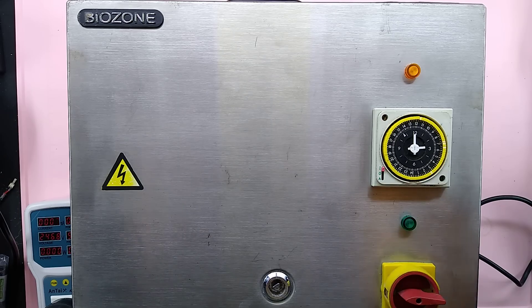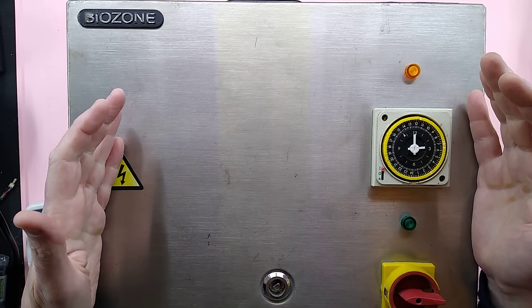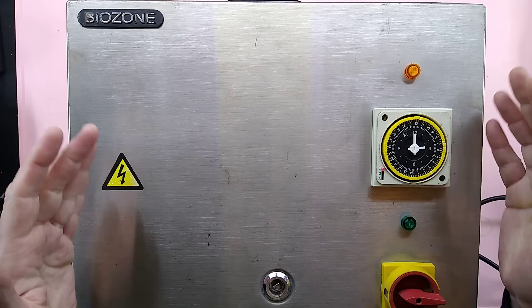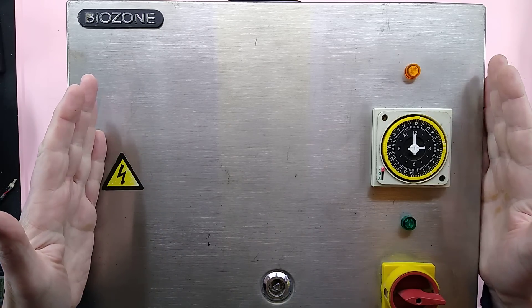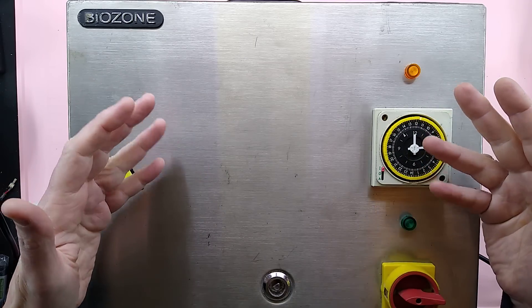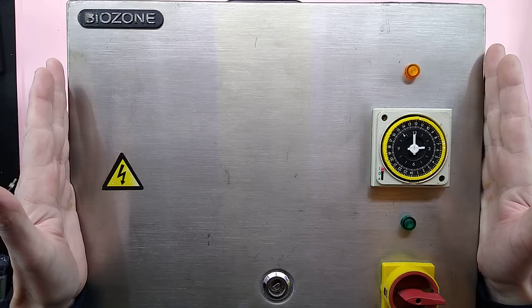This complete monster was an irresistible eBay find. It's a piece of industrial equipment for sanitizing cold rooms and other places, and it's an ozone generator, but it's a very large-scale one.